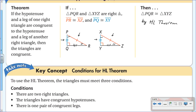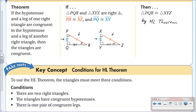There are three key conditions for the hypotenuse-leg theorem. Number one: you must have two right triangles — if you do not, you cannot use HL period. Number two: the triangles must have congruent hypotenuses. Number three: there must be one pair of congruent legs. All three conditions must be met for the triangles to be congruent by HL.